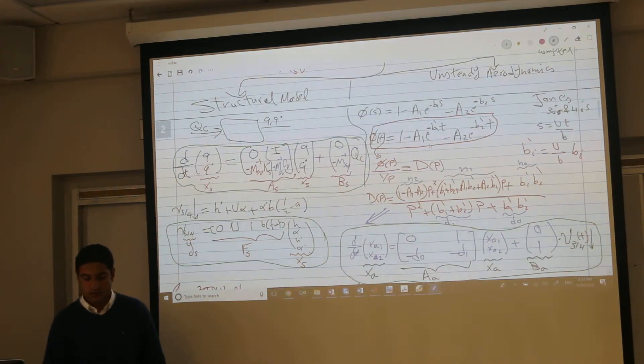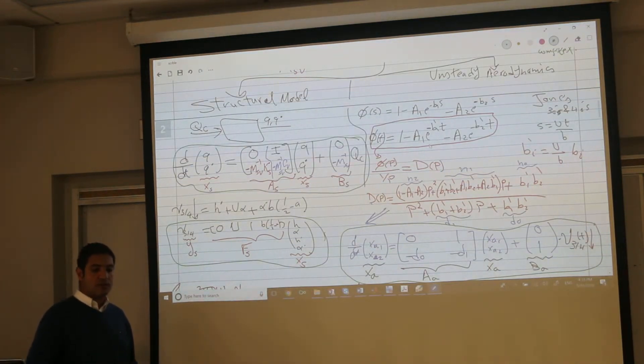We're not assuming that. Why do you think we're assuming that? The flutter is endless because it's being fed by the structure. So it's interaction between structure and aerodynamics. This is why it's a sustained oscillation.